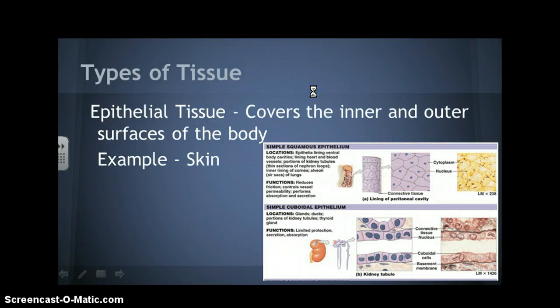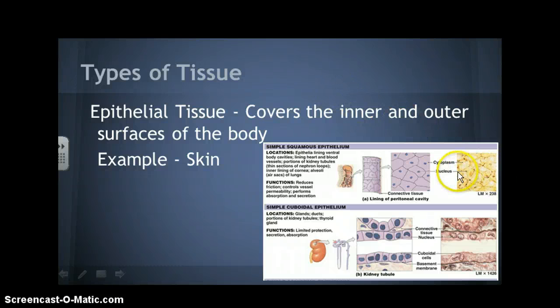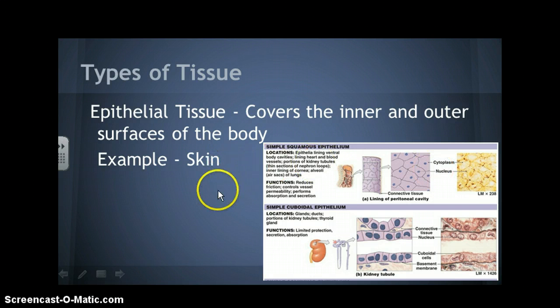Epithelial tissues cover the inner and outer surfaces of the body. Skin would be an example of that. Here are some more pictures of the different types of epithelial tissues and their cells. It also lists the function of them on the chart, though you don't have to worry about knowing the chart — it's just for reference.